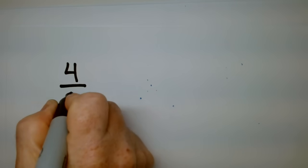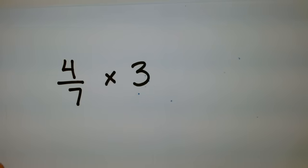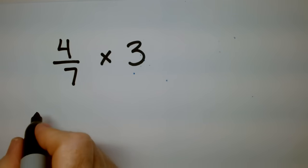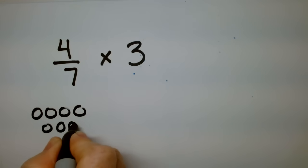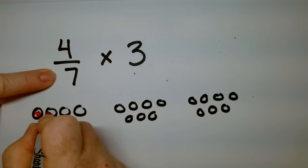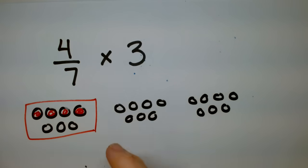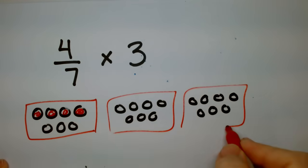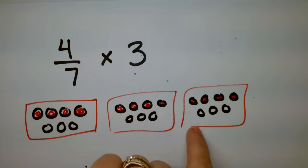If I say 4 over 7 and I want to multiply that by 3, wait, don't do it yet. What does that mean? 1, 2, 3, 4, 5, 6, 7. It means 4 over 7, I am coloring in 4 of those out of 7, and I'm doing that 3 times. 1, 2, 3. You eat 4 out of 7 and you've done it 3 times.